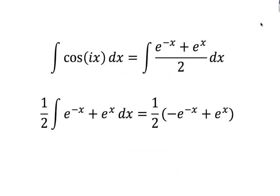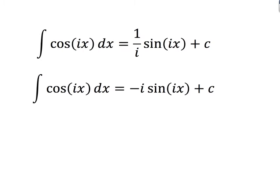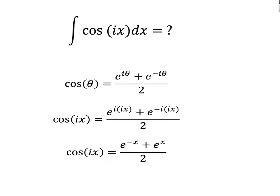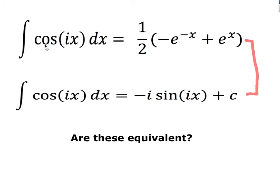Since cos(ix) = (e^x + e^(−x)) / 2 is a real function, it's straightforward to integrate. Taking one-half outside the integral, I integrate e^(−x) + e^x: e^(−x) integrates to −e^(−x) and e^x integrates to e^x. So the integral of cos(ix) equals (1/2)(e^x − e^(−x)). The question now is whether this matches the predicted result of minus i·sin(ix).